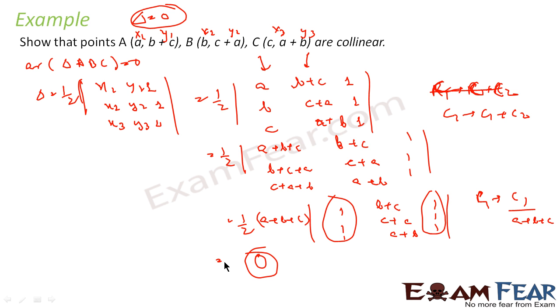Very simple. The concept was for three points to be collinear, the area of the triangle formed using these three points will be 0.